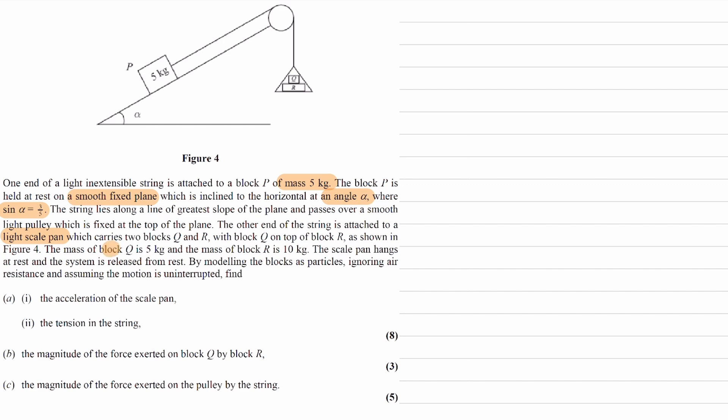The mass of block Q is 5 kilograms, the mass of block R is 10 kilograms. The scale pan hangs at rest, then the system is released from rest. By modeling the blocks as particles, ignoring air resistance, and assuming the motion is uninterrupted, find the acceleration and the tension.